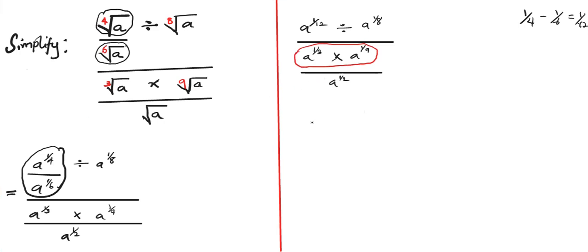Now let's handle a to the power one over three times a to the power one over nine. According to the law of indices, when multiplying we add the powers, so we get a to the power one over three plus one over nine.